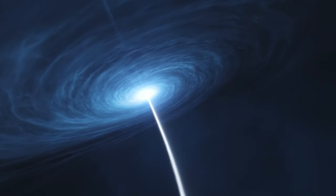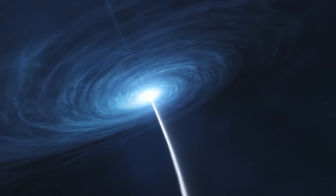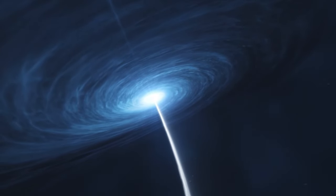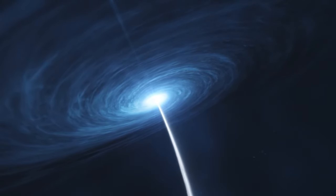The jets are believed to be powered by the black hole's magnetic structure, and they can carry high energy plasma away from the black hole at almost the speed of light.